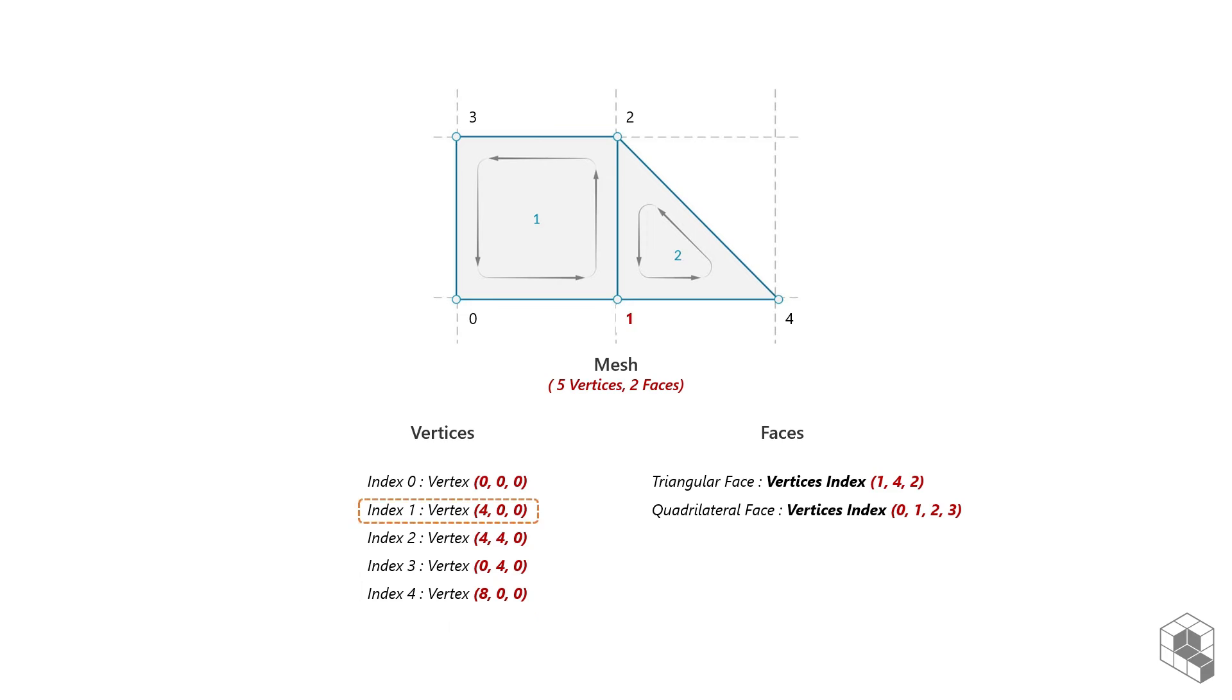Indices 1, 4, and 2 from the vertices list represent the first face, and indices 0, 1, 2, and 3 represent the second face. This system makes sense from a data efficiency point of view.